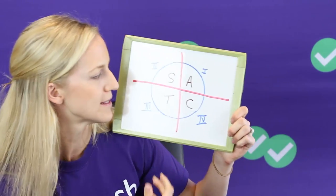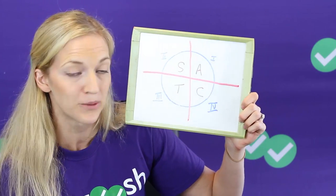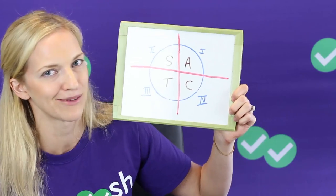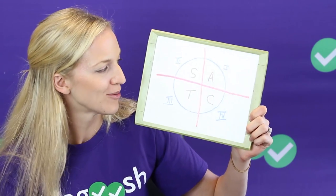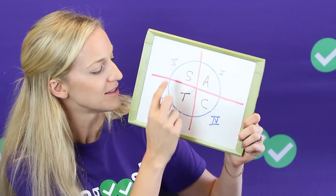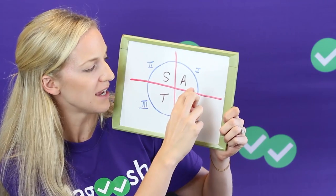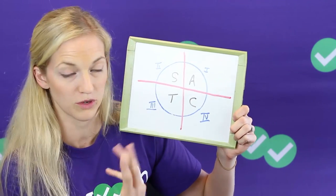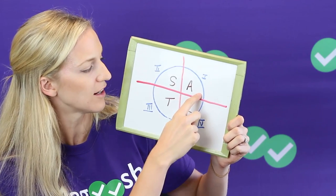There's several phrases that people fill in here but the one that I know is all students take calculus. Maybe you're not taking calculus yet. Maybe you are and that's why you're here because you forgot your trig from last year, but all students take calculus. So this A means that all of the trig functions, all three trig functions—sine, cosine and tangent—are positive here.